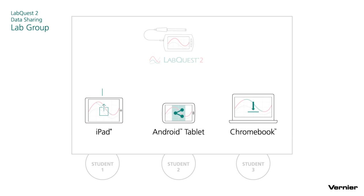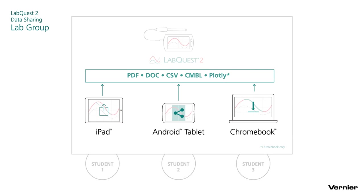Once the students have finished their own analysis of the data, they can export in a variety of different formats. They can print it, save it as a PDF, or move it into a word processing program to write lab reports. They can also save the data as a text file or CSV, which can be moved into Excel, MATLAB, Google Docs, or whatever you like. Another format is CMBL, which can be opened in Logger Pro if the students want to finish the lab on a desktop computer at home. Logger Pro always includes a school-wide site license. You can also export it to a web-based analysis tool, such as Plotly.